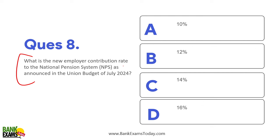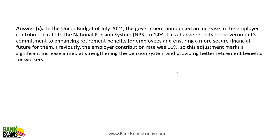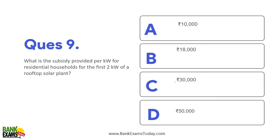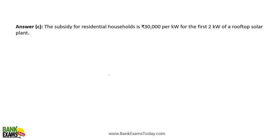The maximum employer contribution to the NPS account of the employee has been increased — it used to be 10% but now it is 14%, which is a good step. What is the subsidy provided per kilowatt for residential household rooftop solar plants? For the first two kilowatts, it is ₹30,000 per kilowatt.